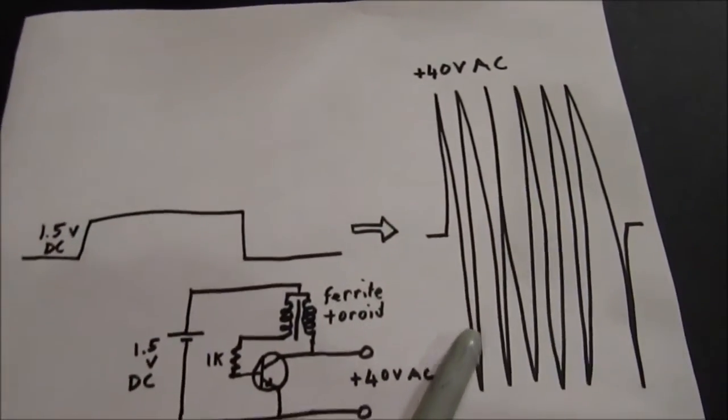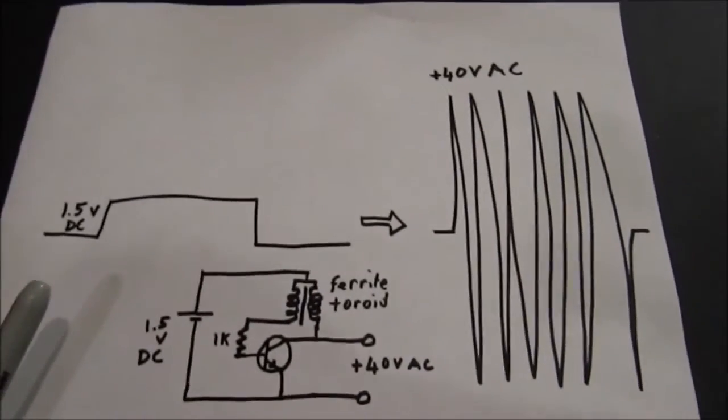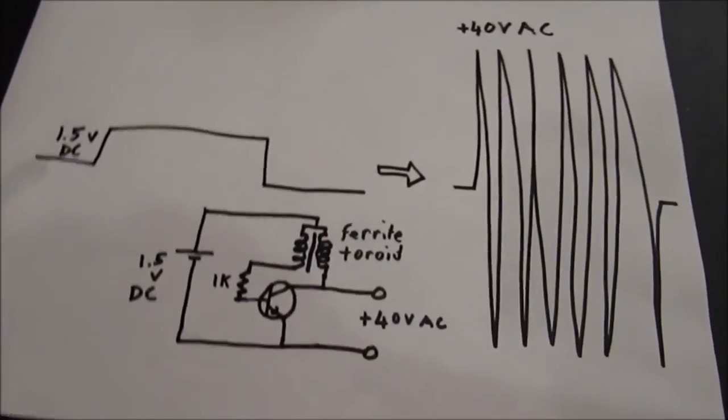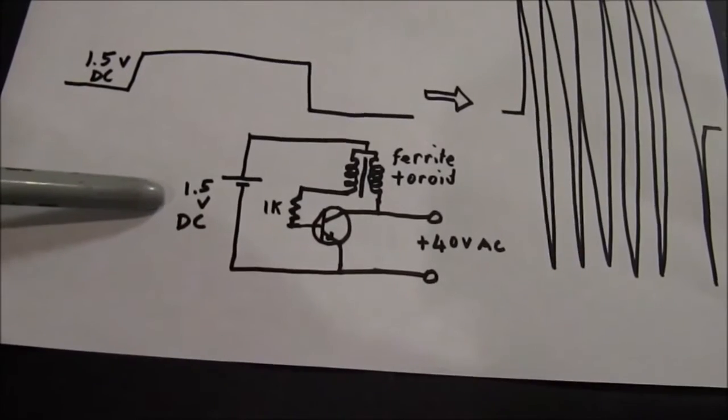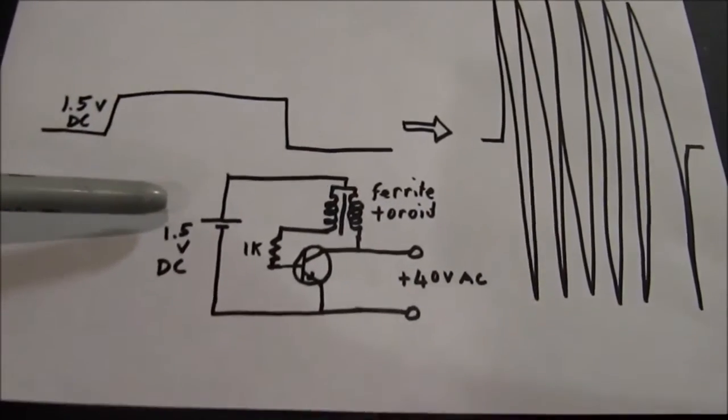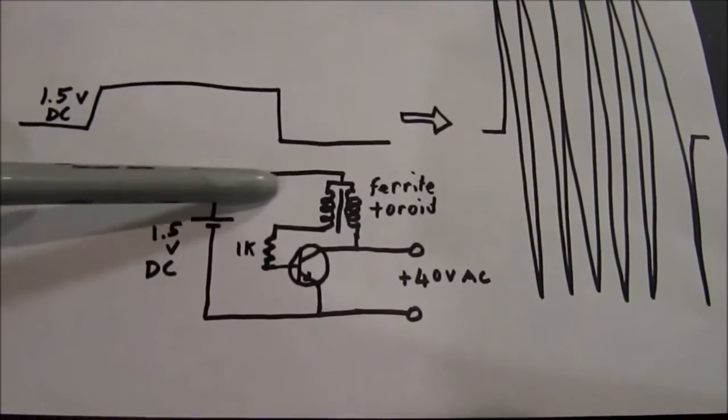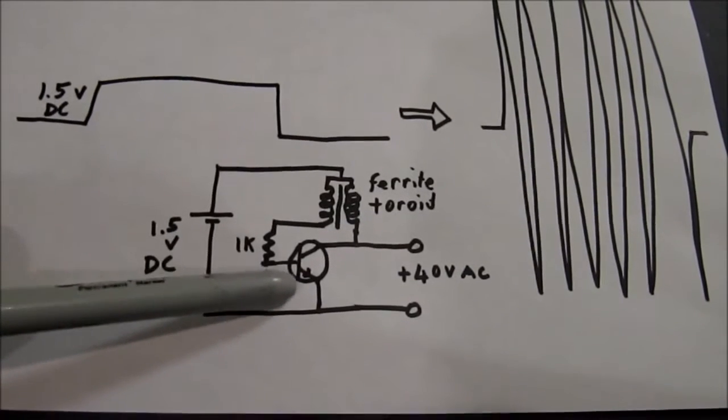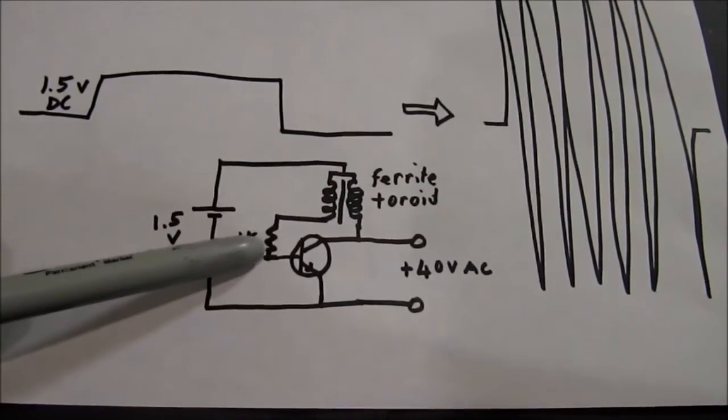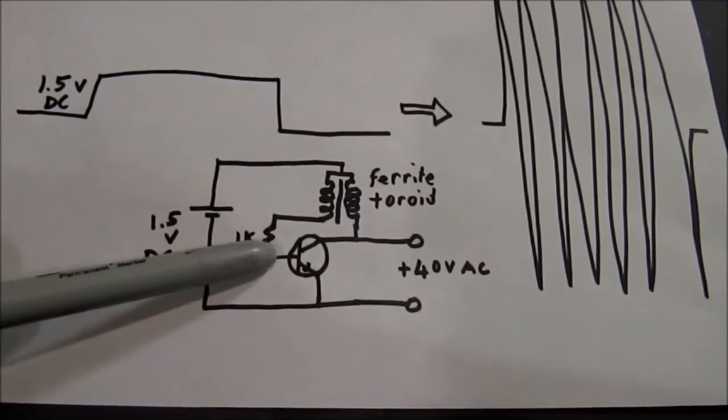This depends on the number of turns on your ferrite toroid. So you have a 1.5 volt battery here. The 1.5 volt battery puts a voltage across the gate via this 1k resistor and the emitter and turns on the transistor.